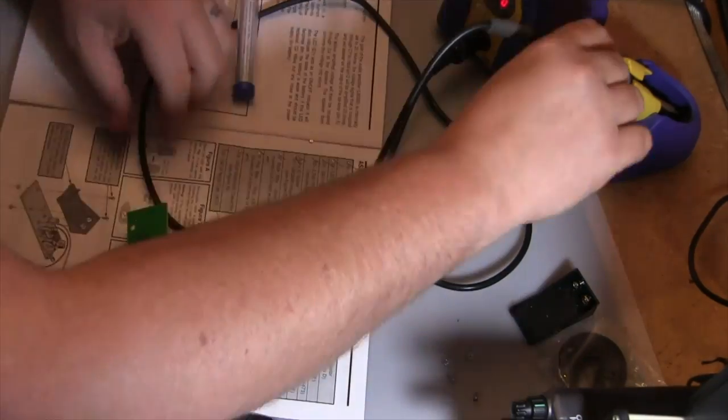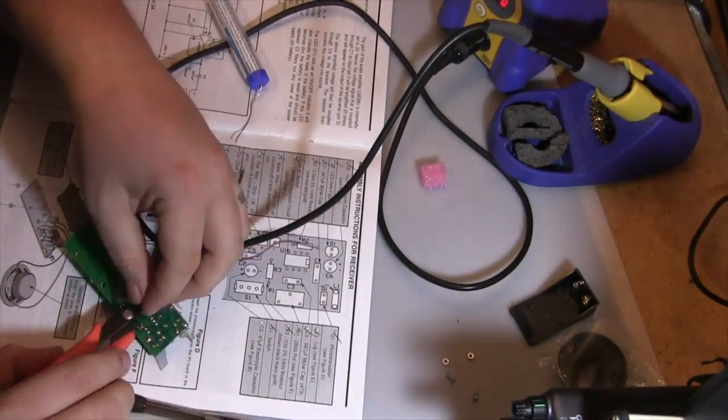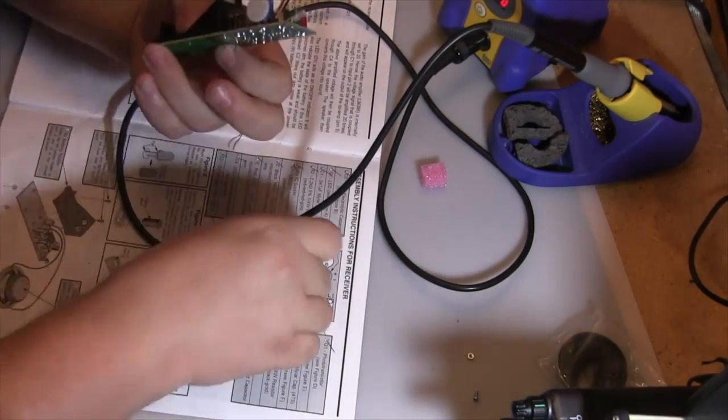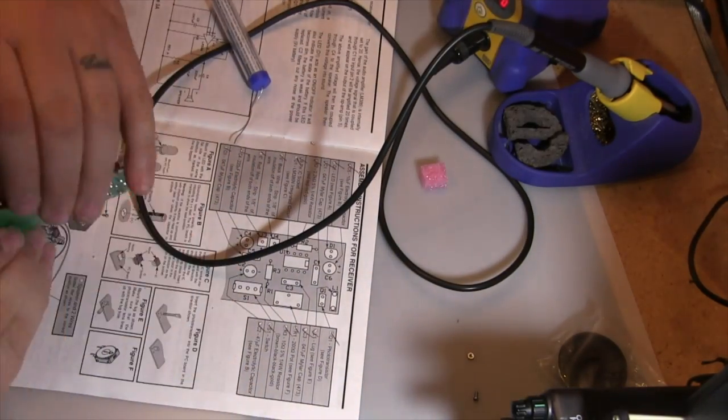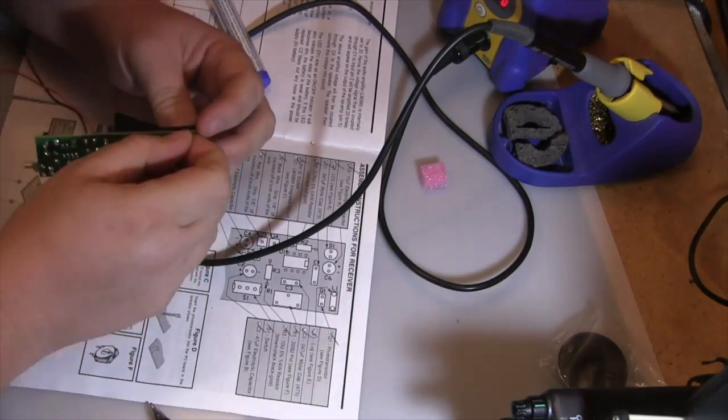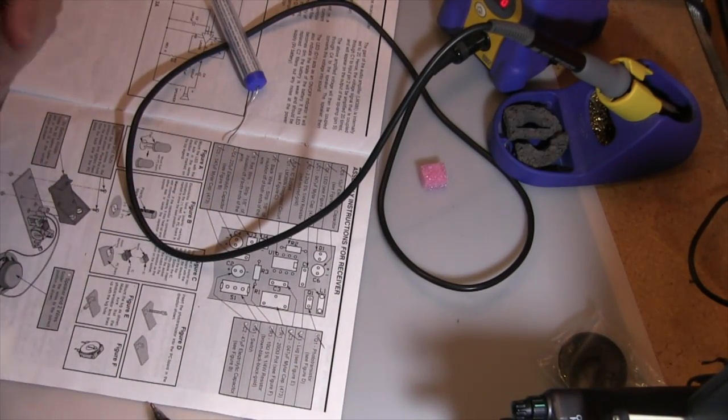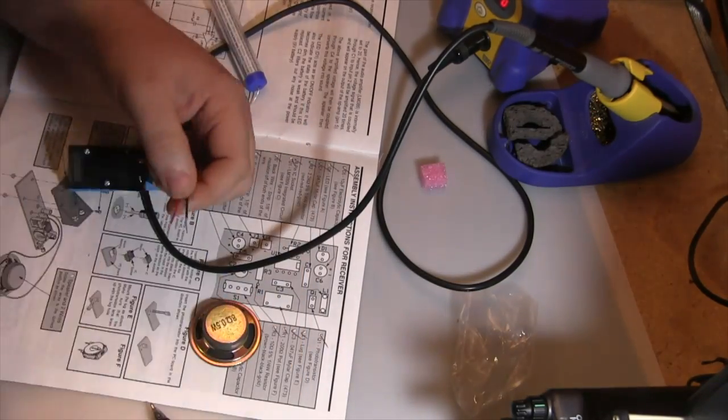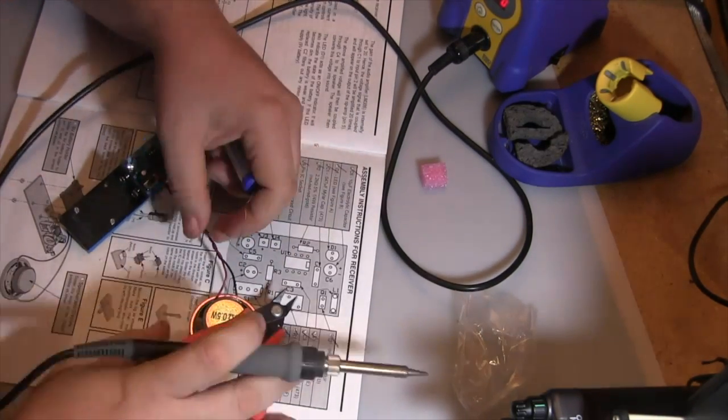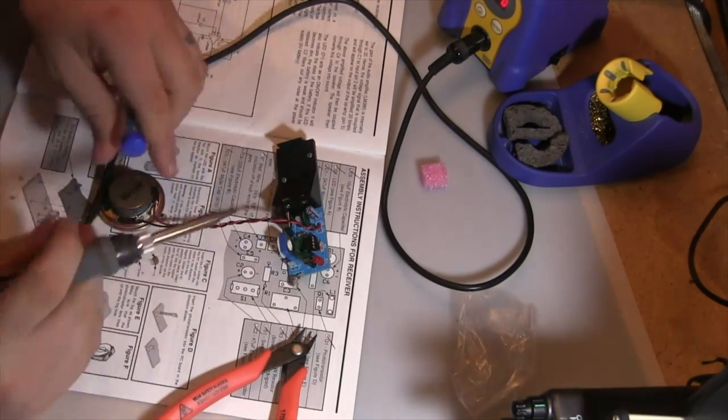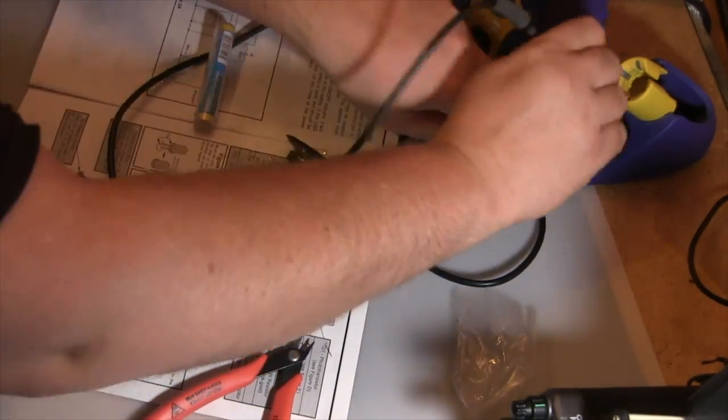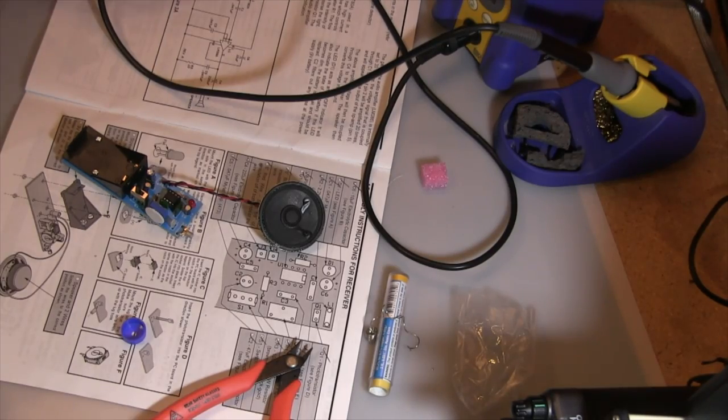The pot I installed is used to control the volume. We're soldering down the power switch and a few more components. We're just about done with the receiver section. The battery holder is going in place. The directions didn't call for this, but I twisted the speaker cable up so it would stay as one instead of whipping around everywhere.